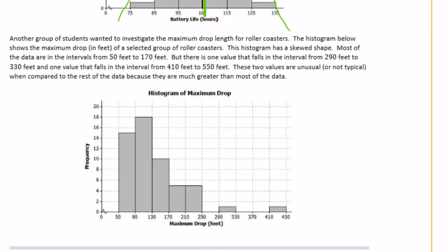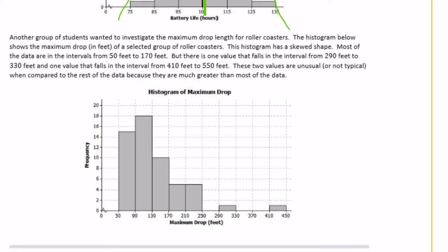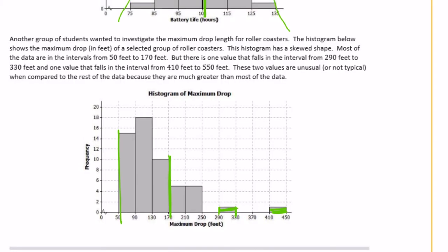Another group investigated maximum drop length for roller coasters. That histogram has a skewed shape — most data falls between 50 and 170 feet, but there is one value in the 290 to 330 feet interval and one in the 410 to 450 feet interval. These two values are unusual compared to the rest of the data because they are much greater than most values. This is a skewed data set, skewed in one direction versus the other.